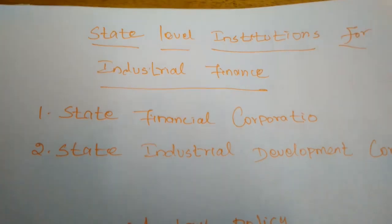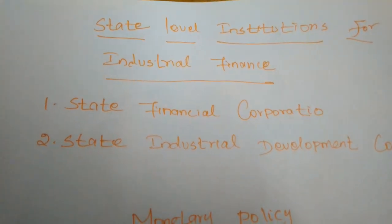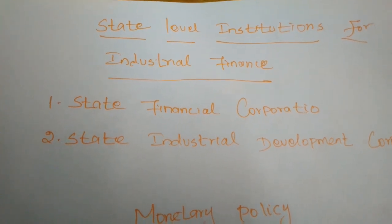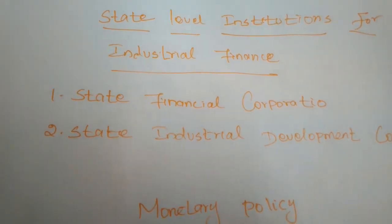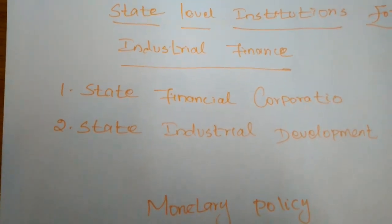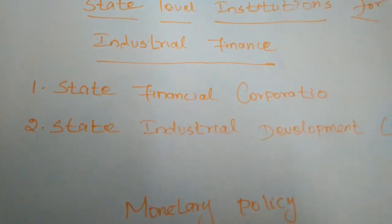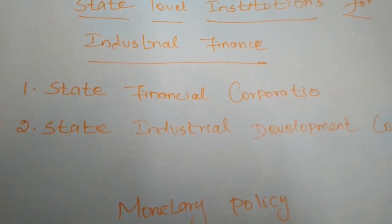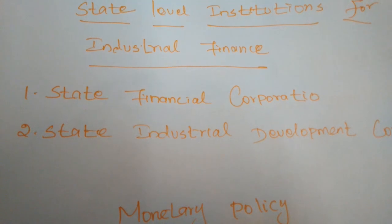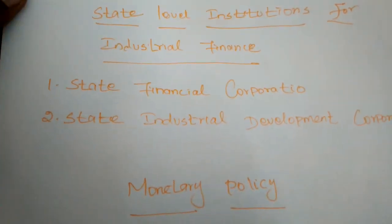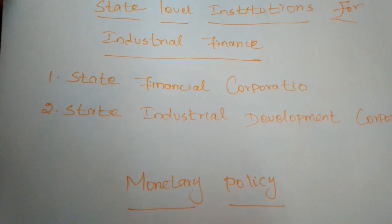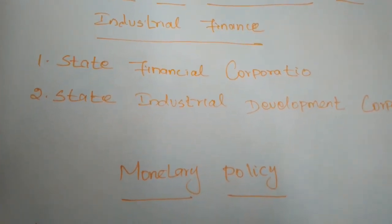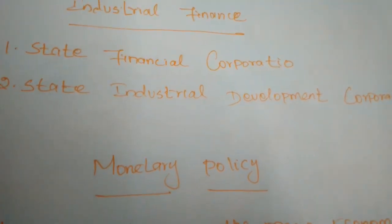Like national level institutions for industrial finance, some state level institutions are also available in our nation. The government of India passed the State Financial Corporation Act in 1951, and the state financial corporations were set up in many states. There are two types of state level institutions: State Financial Corporation and State Industrial Development Corporation.